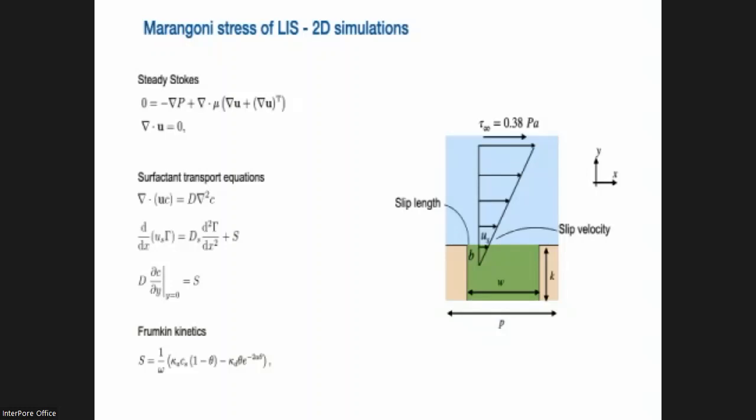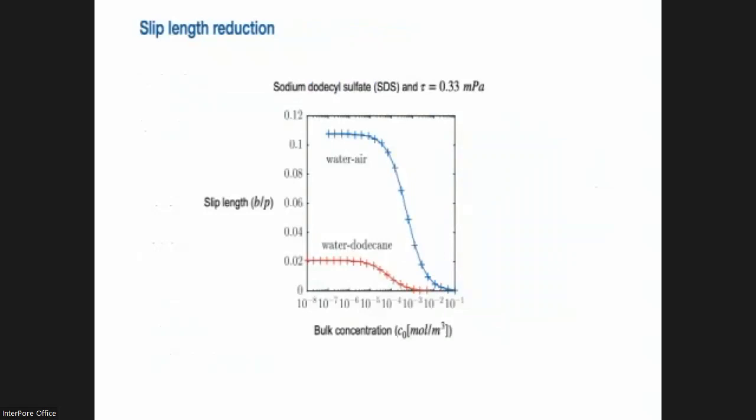The slip length is related to slippage, which I mentioned before. As you see, it's the geometrical distance which you have to extrapolate below the interface until you reach a velocity zero. A large slip length means a large drag reduction, low frictional resistance. So we want to see what happens with the slip length for different bulk concentrations of surfactants.